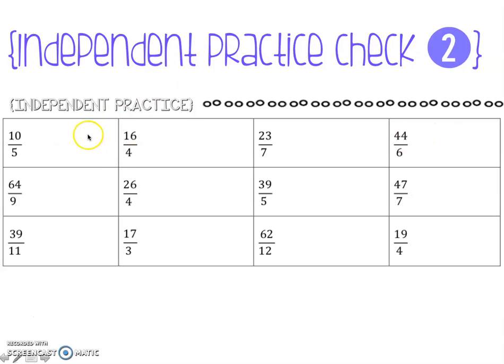10 fifths as a mixed number would just be the whole number two. Check it off if you got it right, circle it if you got it wrong. 16 fourths is gonna be just the whole number four.